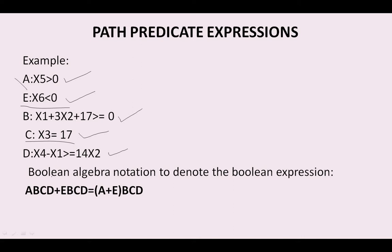Using boolean algebra notation to denote the boolean expression, this can be represented as: a, b, c, d plus e, b, c, d equals a plus e into b, c, d. This is the boolean algebraic expression where we can substitute a, b, c, d values in order to get the boolean expression to achieve the achievable path. This is treated as the path predicate expression and this is one of the best examples of the path predicate expression.